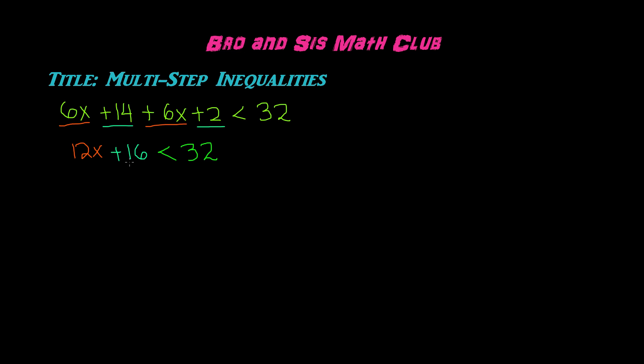First we have plus 16. In order to get rid of the plus 16, we have to use inverse operations. The inverse of addition is subtraction, so we're going to subtract 16 on both sides of the inequality. Positive 16 and negative 16 cancel each other out, and we're left with 12x is less than 16, because 32 minus 16 gives you 16.